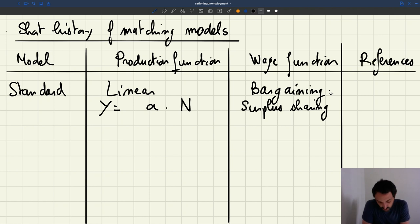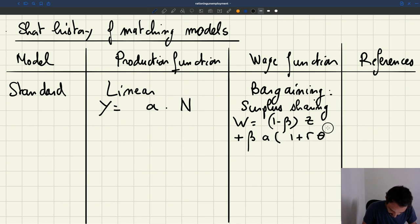So there was a bargaining and the solution was given by surplus sharing. The expression for the wage is that once we assume surplus sharing, your wage is going to be W = (1-β)Z, where β is workers' bargaining power, Z is the value of unemployment, plus βA(1+rθ). So that's the wage that comes out of surplus sharing, but would also come out in standard setup for Nash bargaining.